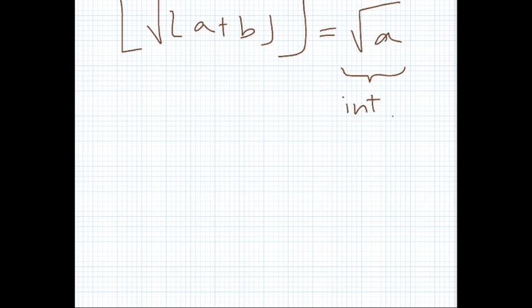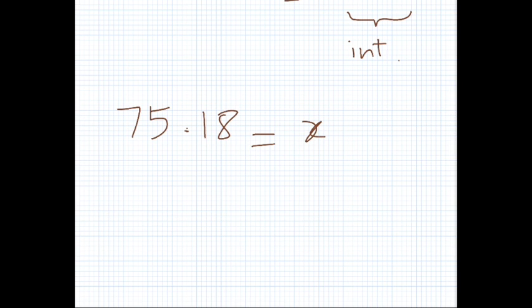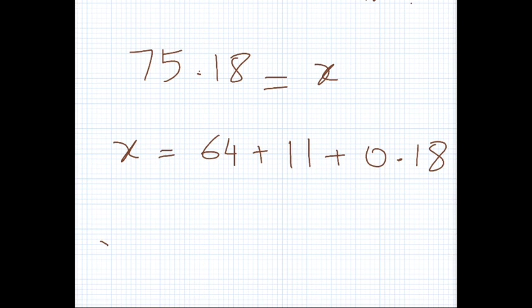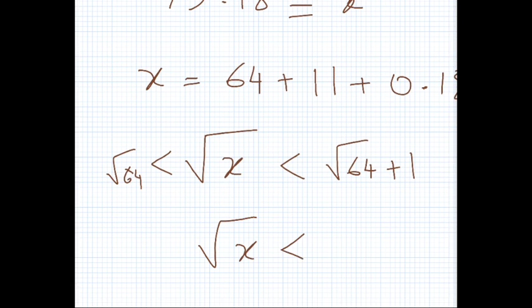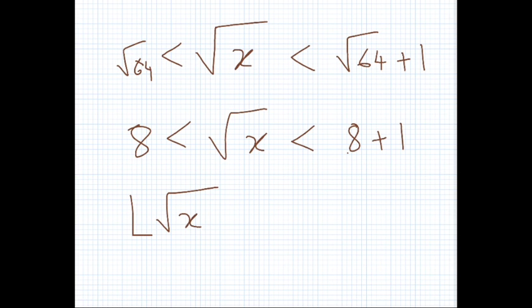Let's apply this with a concrete example: x = 75.18. The largest perfect square less than 75.18 is 64, so a² = 64. Then x = 64 + 11 + 0.18. Since the square root of x lies between √64 = 8 and √64 + 1 = 9, the floor of the square root of x equals 8.